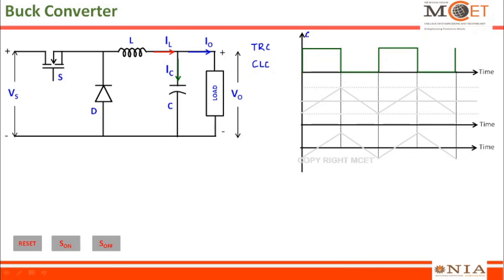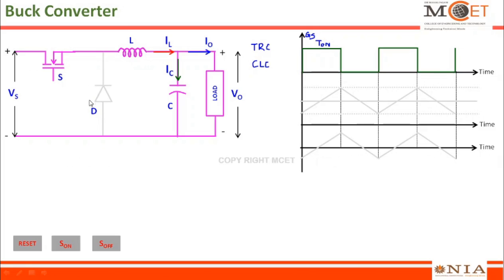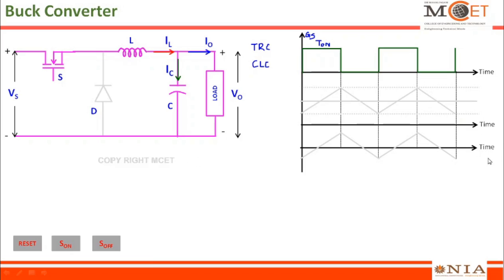Let us assume that a gate pulse has been given to switch S. Once the gate pulse is supplied, switch S will turn ON. Once it is turned ON, the inductor is connected to the source and the capacitor and load are further connected. Since the inductor is connected to the source, this end of the inductor is more positive, because of which the diode is in reverse bias condition. The inductor is now in charging mode — the inductor current will slowly rise up from the minimum value towards the maximum value. Once it reaches the maximum value, I will turn OFF the switch.